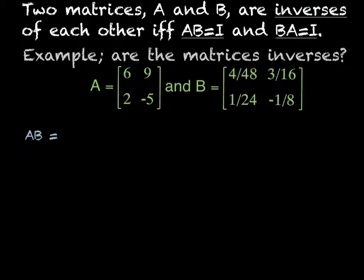Two matrices, A and B, are inverses of each other if and only if AB equals I and BA equals I. So they both have to equal the identity matrix. If one of them does not, then it is not an inverse of it. So we want to find out if these two matrices are inverses of each other.